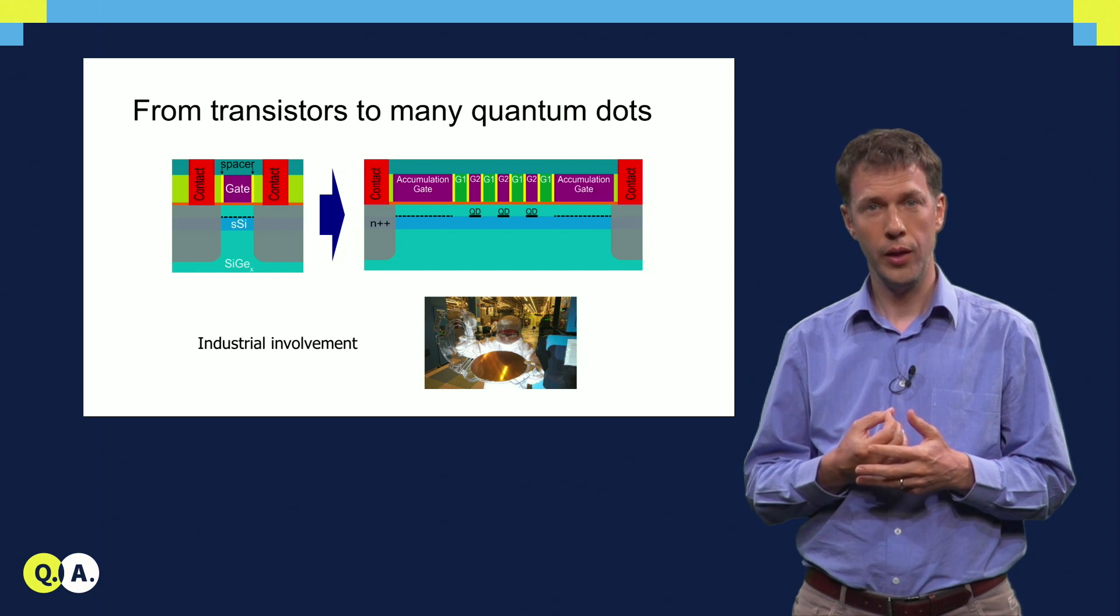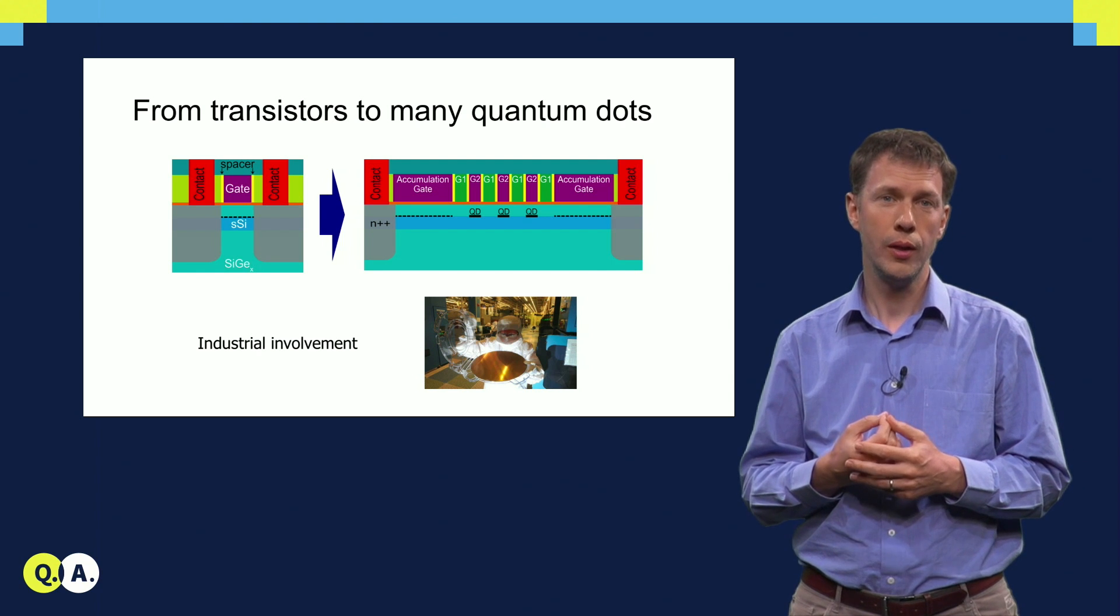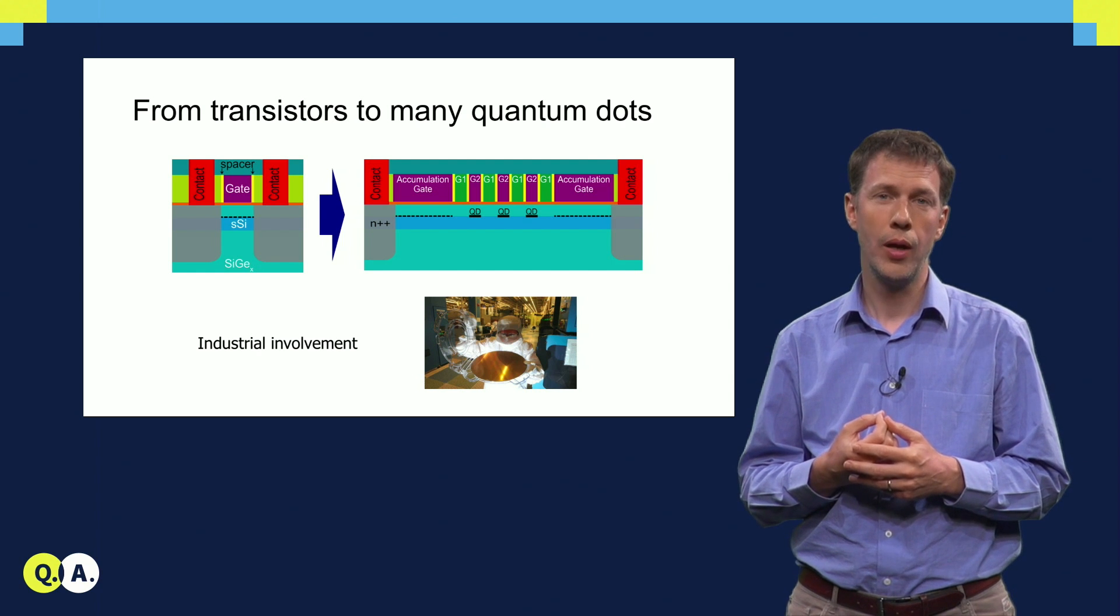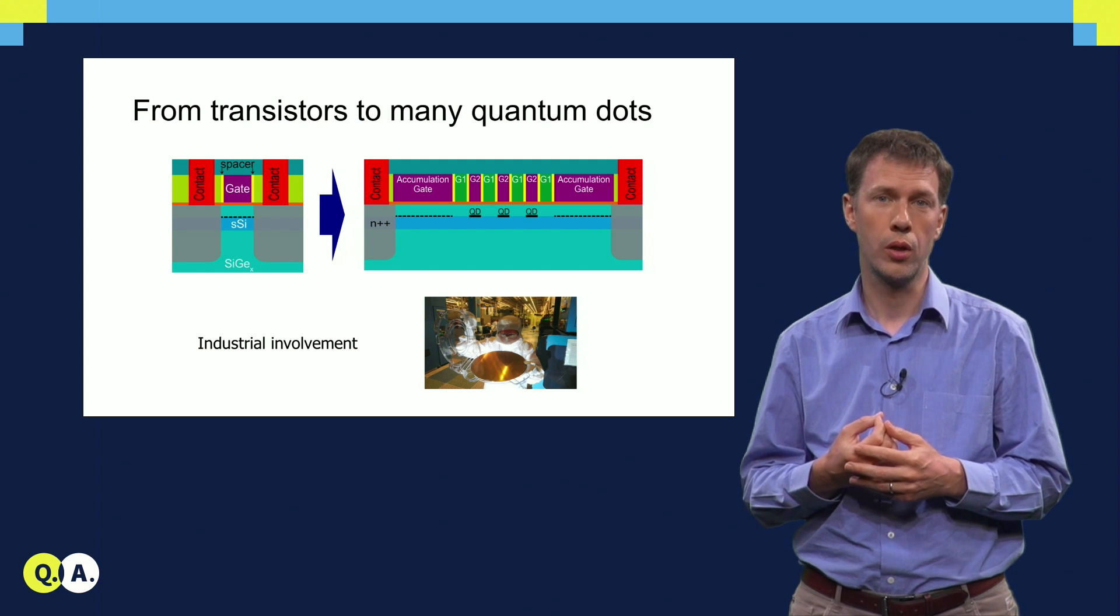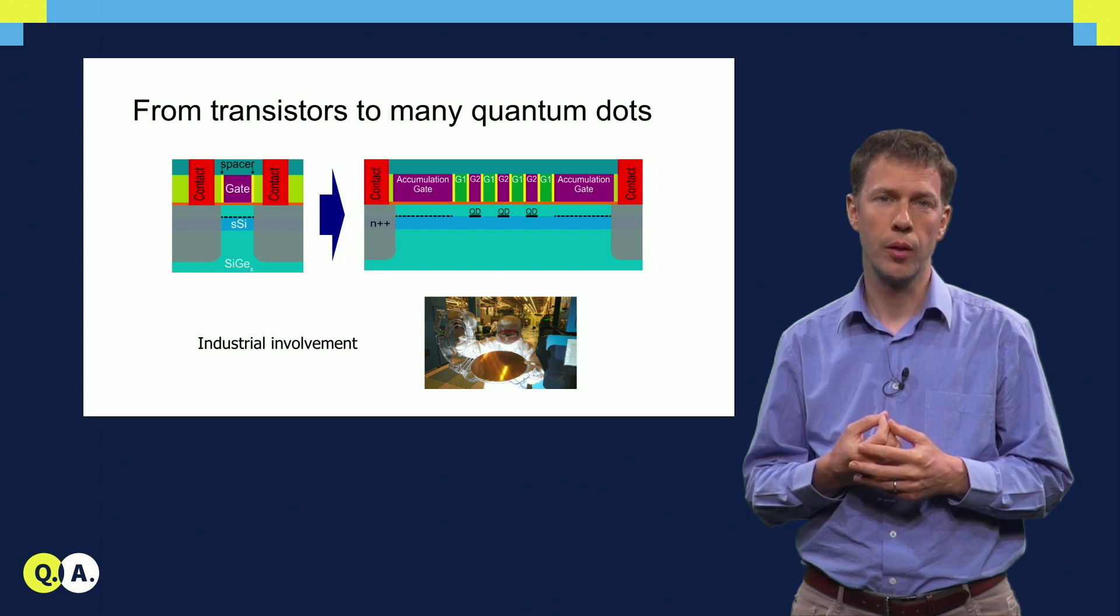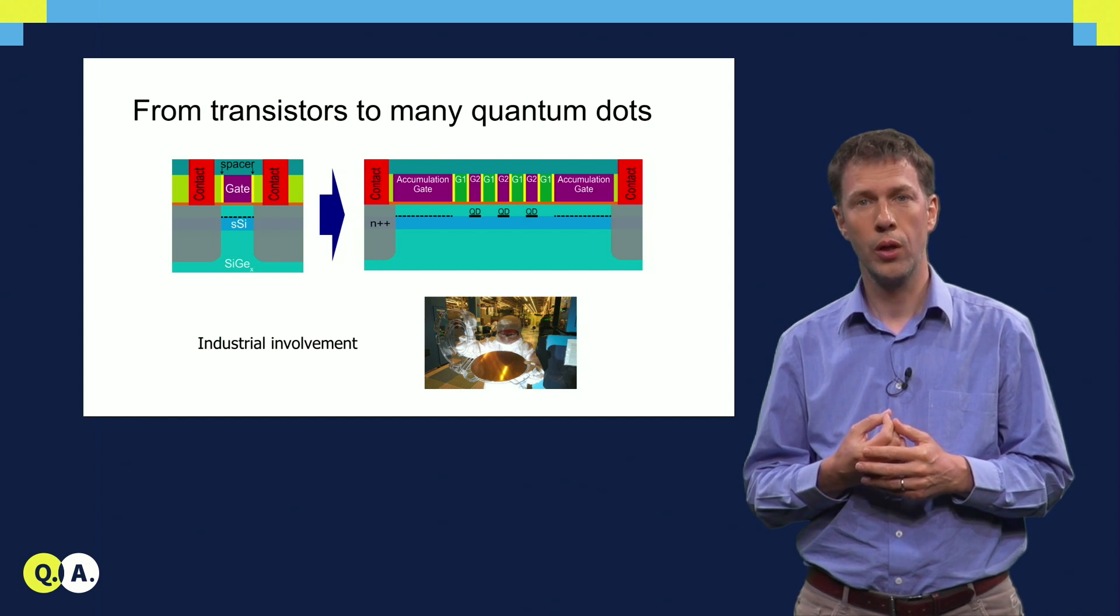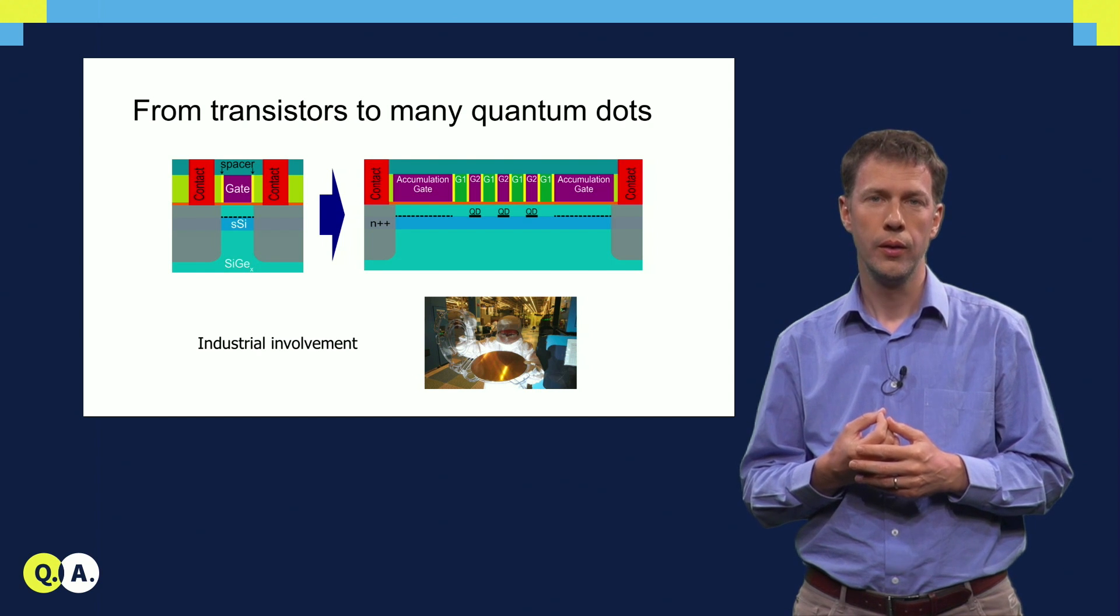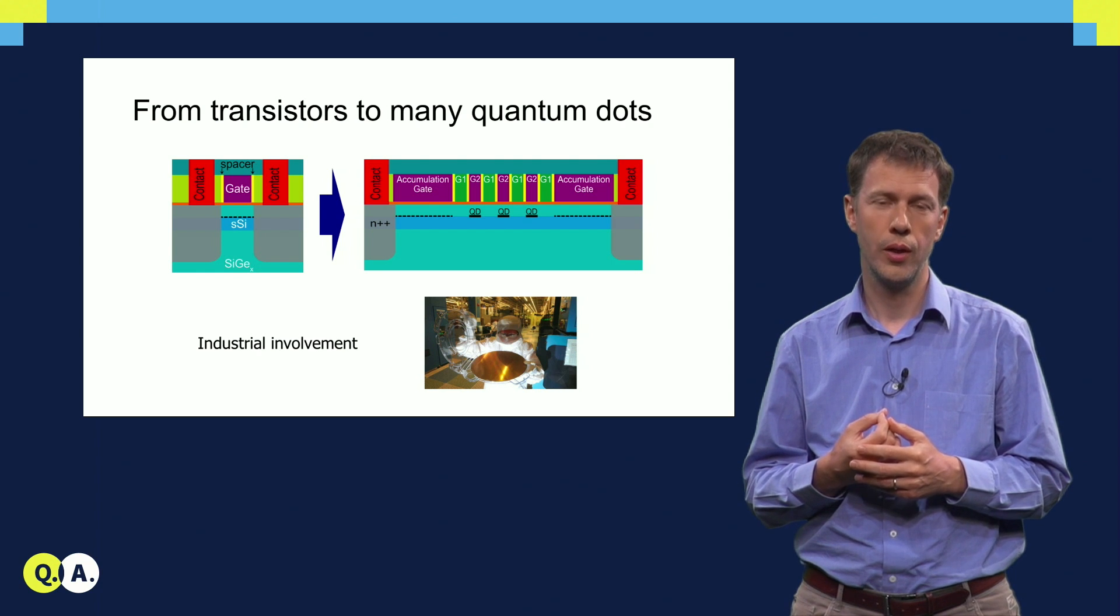To do that, even though university cleanrooms have been a great way to get started, it has become clear that we really need access to industry-standard cleanrooms, that are optimized not for creative science and exploring new ideas like university cleanrooms are, but that are optimized for producing many components that are all as clean and identical as they can be. With this motivation, in 2015 we started a close collaboration with Intel that is focused on using 300 mm technology to produce high-quality quantum dot arrays.